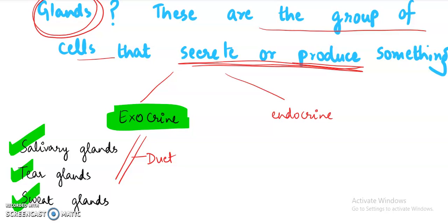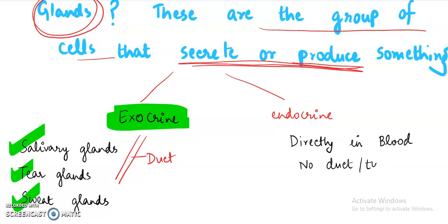On the other hand, endocrine glands are the group of cells that pour their secretion directly into the blood — directly into the blood. No duct or tube is involved. Generally when we talk about endocrine glands, we talk about hormones, because endocrine glands produce hormones.